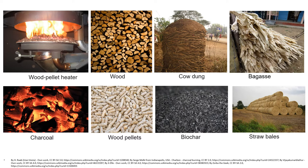Bioenergy is renewable energy made available from materials derived from biological sources, that is, material derived from recently living organisms, which include plants, animals, and their by-products. In this collage of pictures we can see some sources of biomass: wood pellet, wood, cow dung, bagasse, straw bales, biochar, wood pellets, and charcoal. Charcoal is a derivative of wood and was traditionally an important fuel in iron making and other processes.